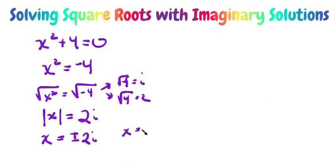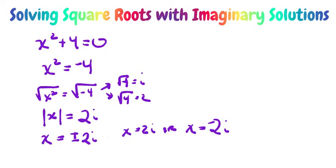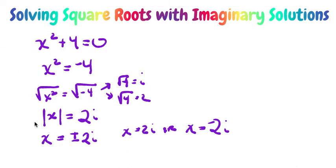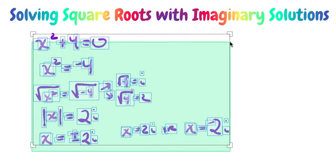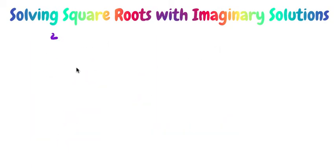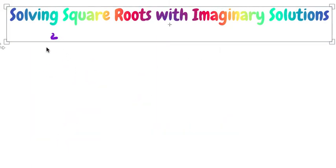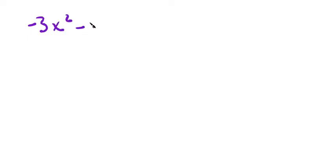So x equals positive or negative 2i. You could also write it as x equals 2i or x equals negative 2i — they mean the same thing. Positive and negative means both positive and negative; you could write them separately. Let's take a look at another example of an equation that has an imaginary solution: negative 3x squared minus 27 is equal to 0.